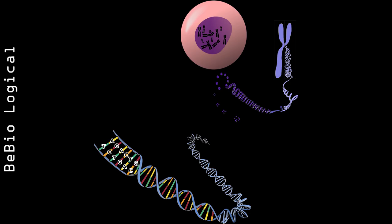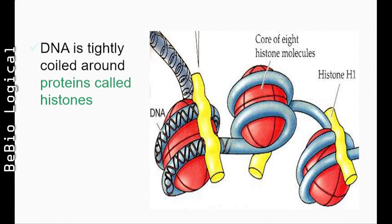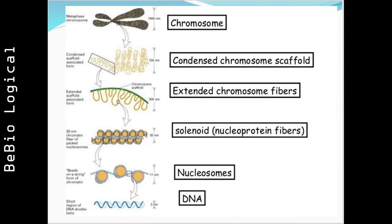Let's see the packaging of chromosome in brief. It starts with linear DNA, which then folds with histone protein to form a nucleosome. Then they fold further to form nucleoprotein fibers or solenoid, then form extended chromosome fibers, which further condense to form the chromosome scaffold, and then condense again to form the chromosome.